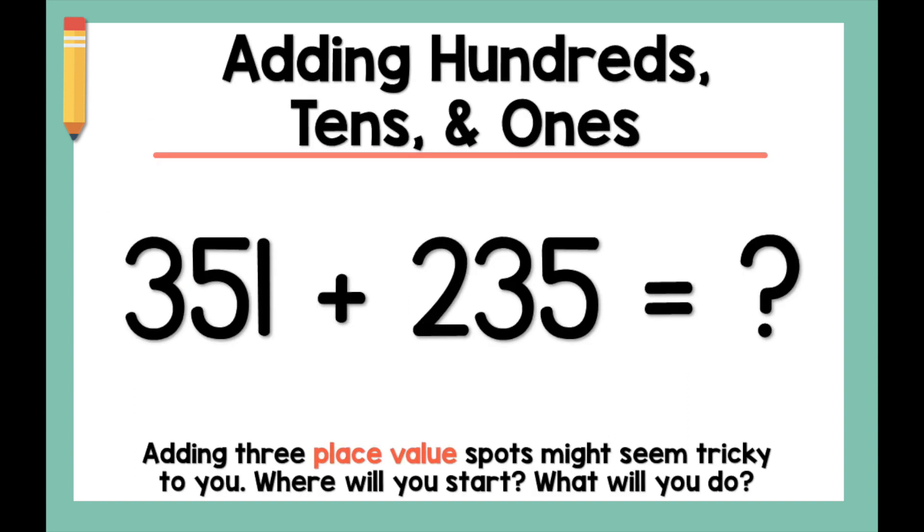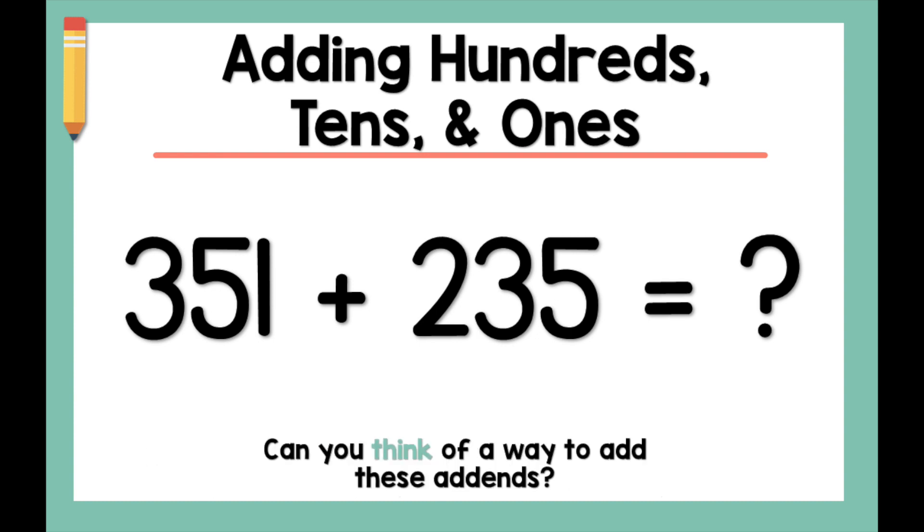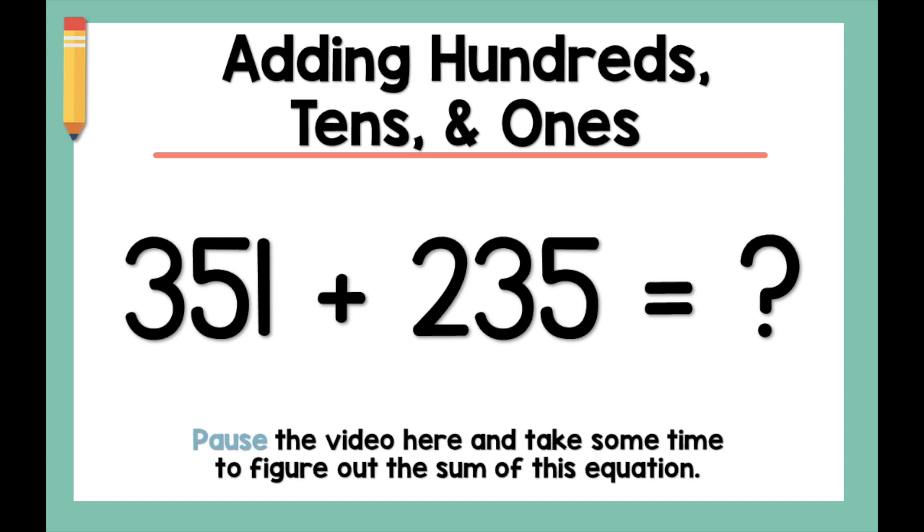Adding three place value spots might seem tricky to you. Where will you start? What will you do? Can you think of a way to add these addends? Pause the video here and take some time to figure out the sum of this equation.